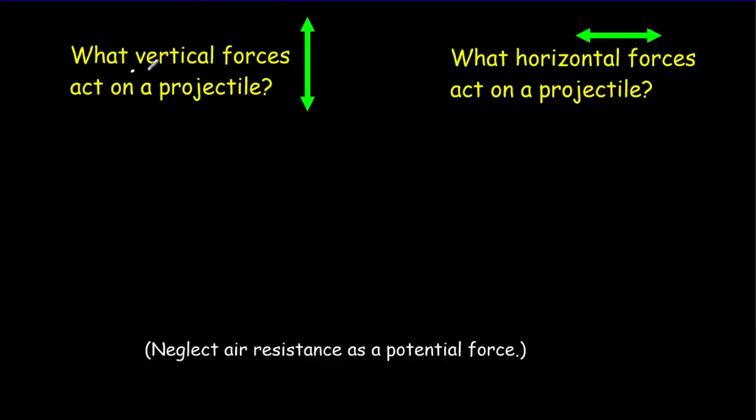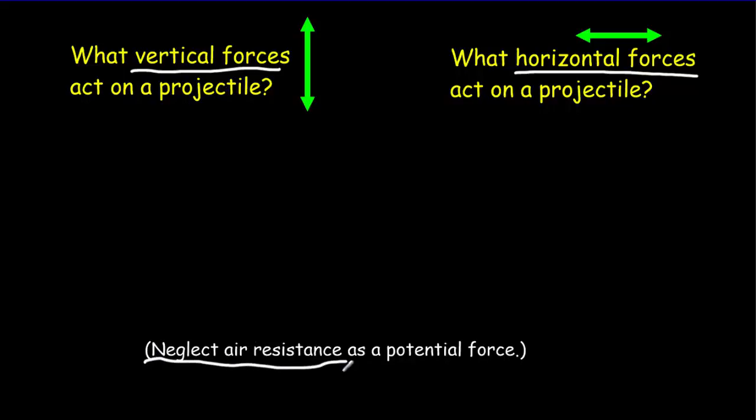What I'd like you to think about is: what are the vertical forces acting on a projectile, and what are the horizontal forces acting on a projectile? I'd like you to neglect air resistance. That's not a particularly good assumption unless you've got a slow-moving object that's quite dense and aerodynamic. However, we're going to make that assumption because we want to do the simplest physics first, and throwing in air resistance is fairly complicated because it always changes as the object speeds up or slows down. So we're going to neglect air resistance, at least to begin with.